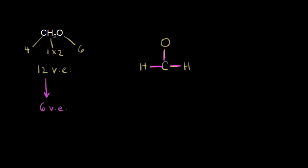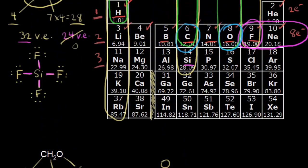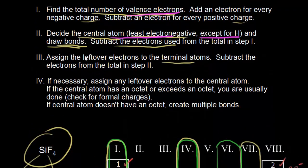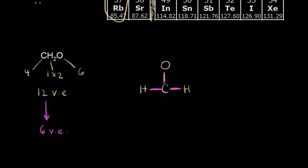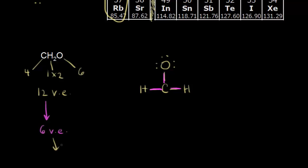In step three, we assign leftover electrons to the terminal atoms — hydrogen and oxygen. We don't assign any electrons to hydrogen because each hydrogen is already surrounded by two electrons. So we assign the remaining six electrons to oxygen. Oxygen follows the octet rule: it already has two electrons around it, so it needs six more — and that takes care of all 12 valence electrons.